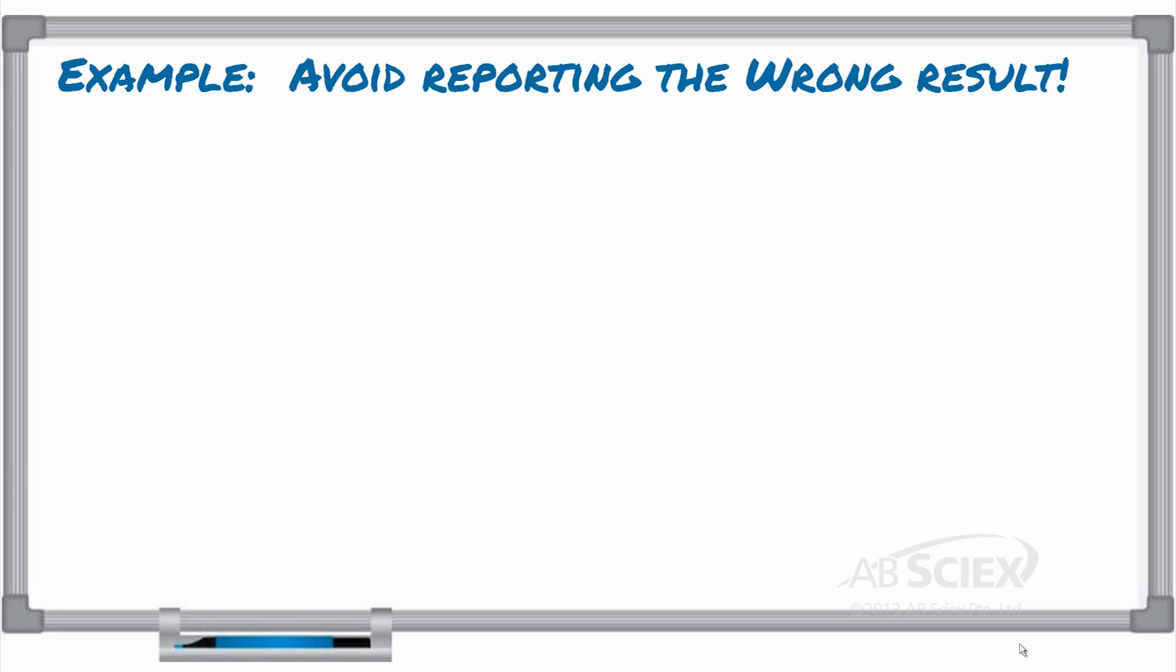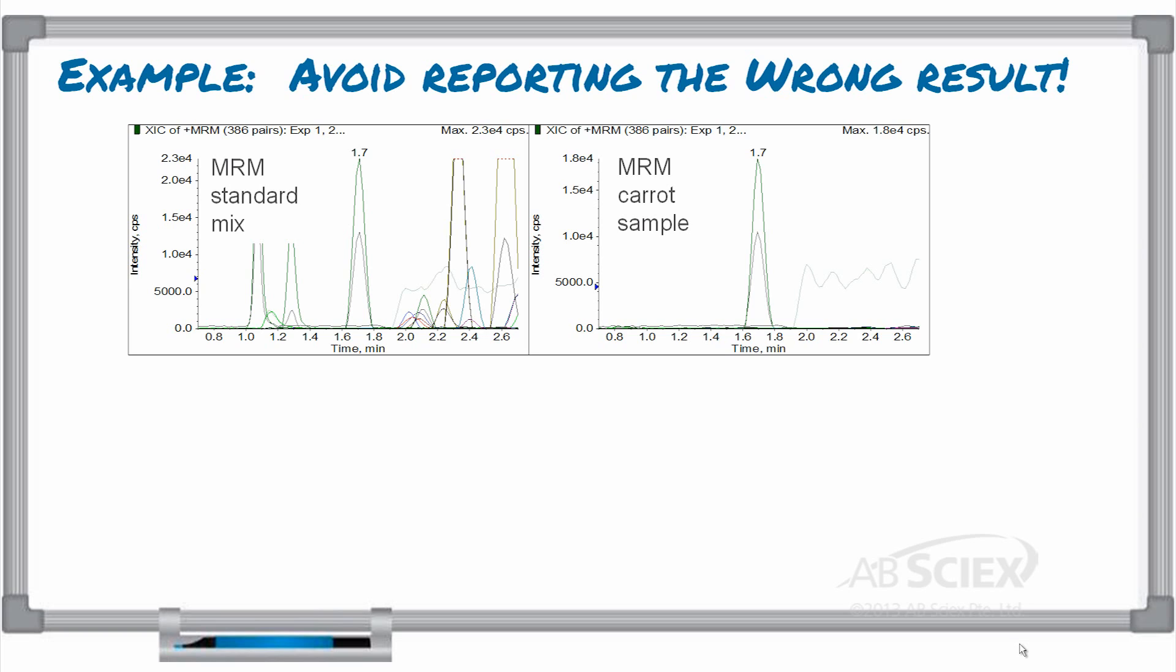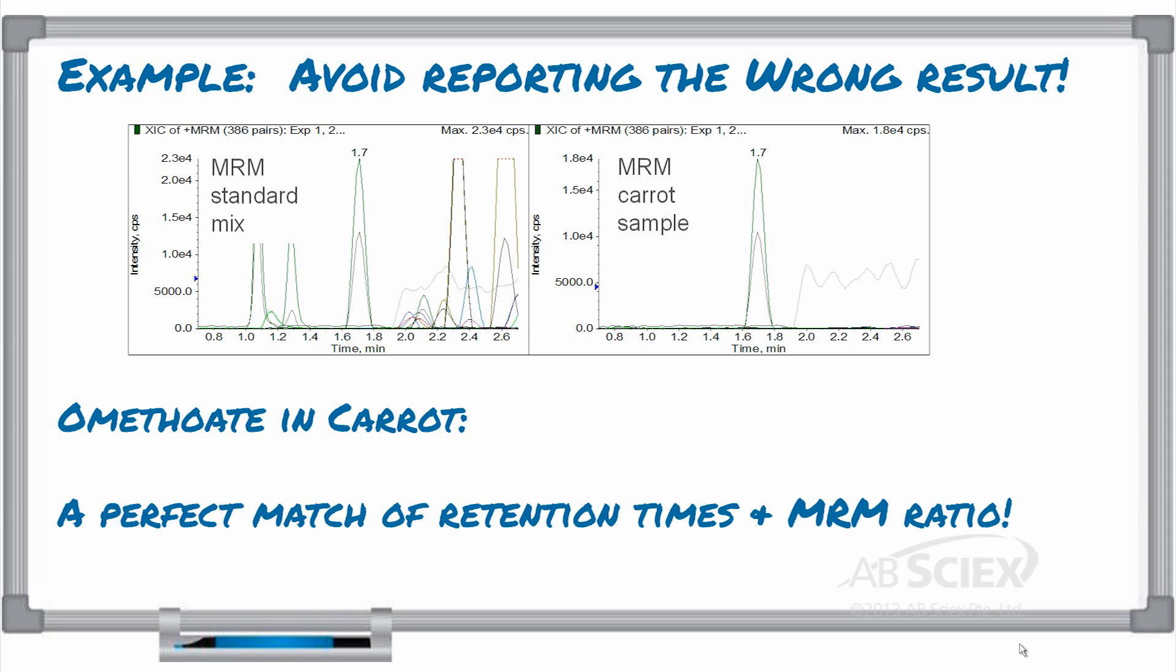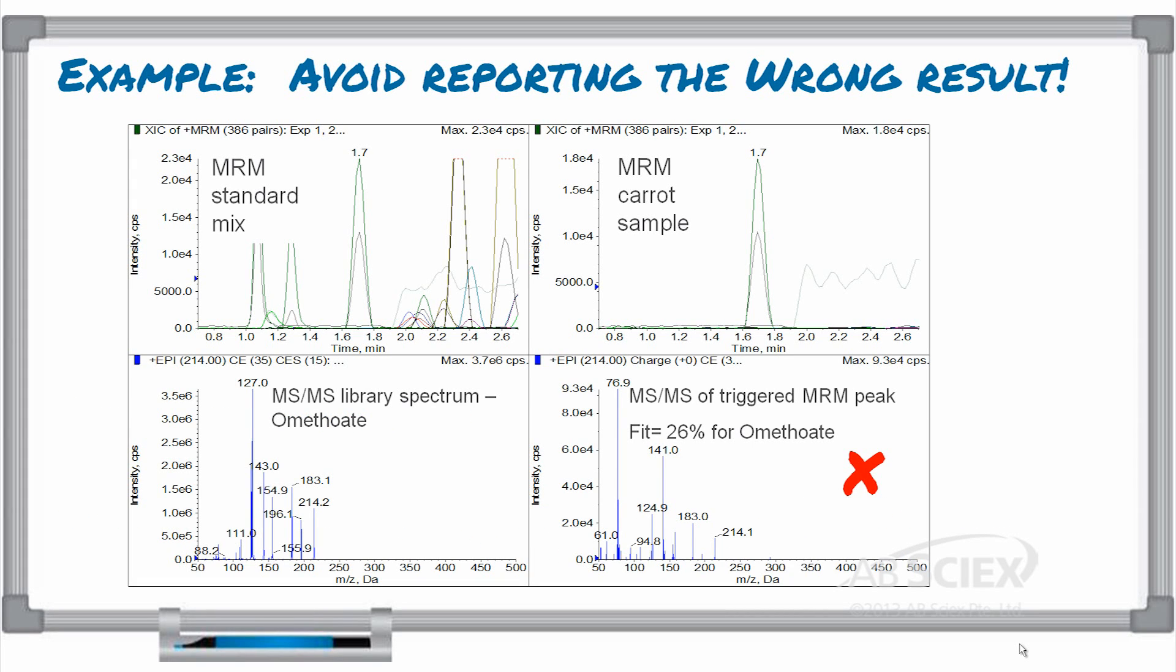Check out this example. In this analysis, we've detected omethoate in a carrot sample, perfect match of retention time and MRM ratio. However, we had our method set up to trigger EPI on any detected MRMs, and when we look at the EPI scan data, we see that the complete MS-MS fragmentation pattern is not even close to the MS-MS fragmentation pattern of omethoate.